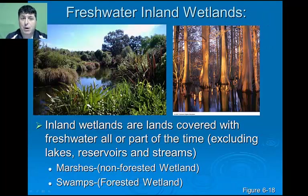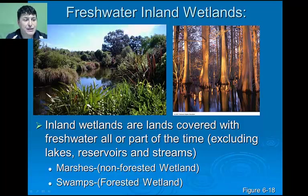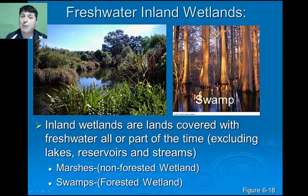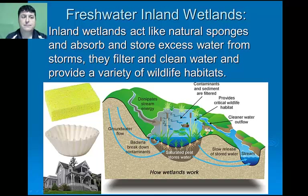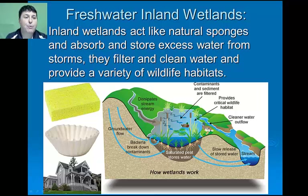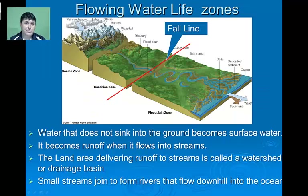Our next freshwater aquatic life zone is inland wetlands — lands covered with freshwater all or part of the time, excluding lakes, reservoirs, and streams. There are two major types: marshes and swamps. The main difference is that a swamp is a forested wetland, whereas a marsh is a non-forested wetland. Inland wetlands perform many natural functions: they act as a natural sponge to absorb and store excess water from storms, act as filters to clean water, and provide a variety of wildlife habitats.